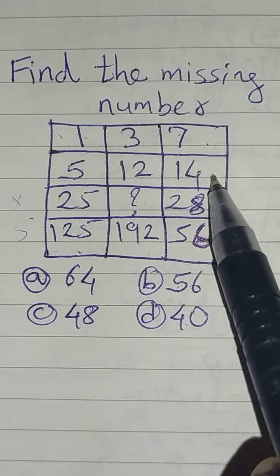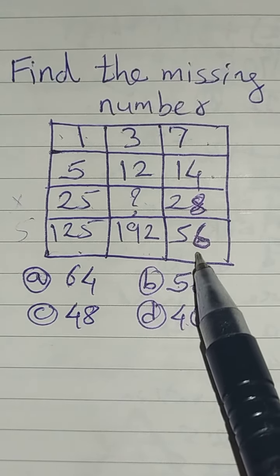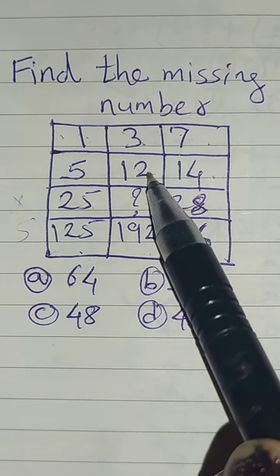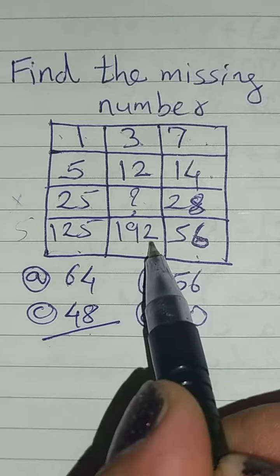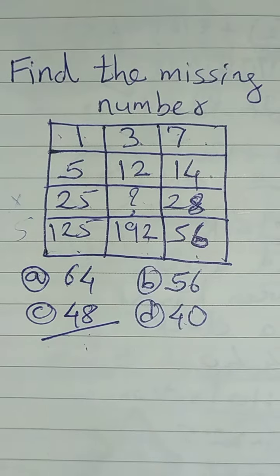Now 7 multiply by 2 is 14, 14 multiply by 2 is 28, 28 multiply by 2 is 56. Then 3 multiply by 4 is 12, 12 multiply by 4 is 48, and 48 multiply by 4 is 192. So this is your correct option.